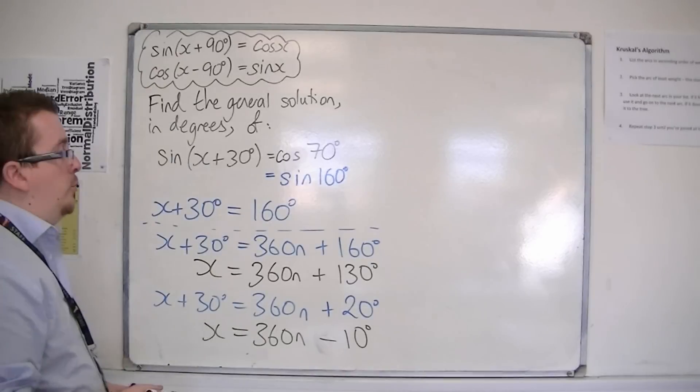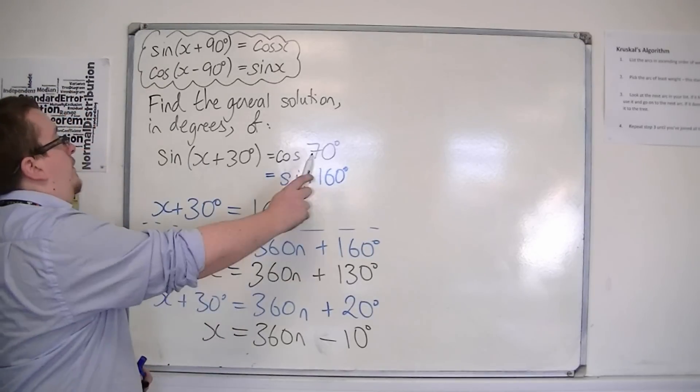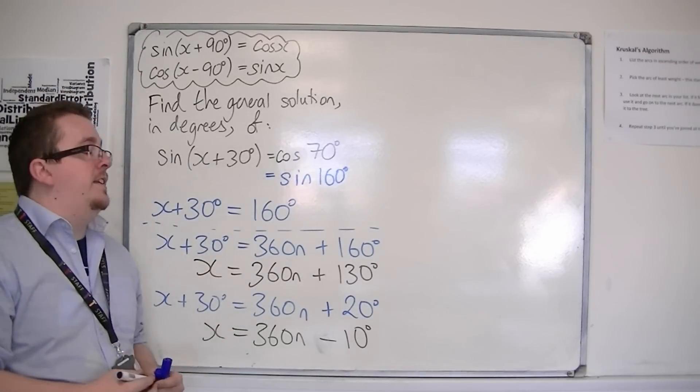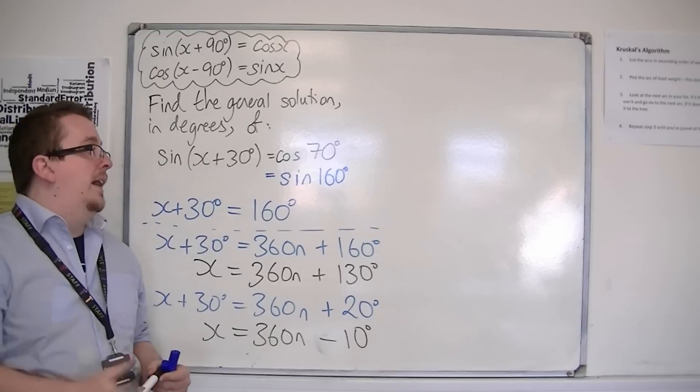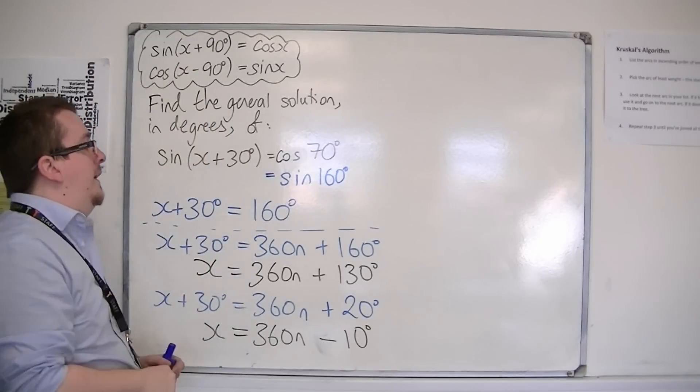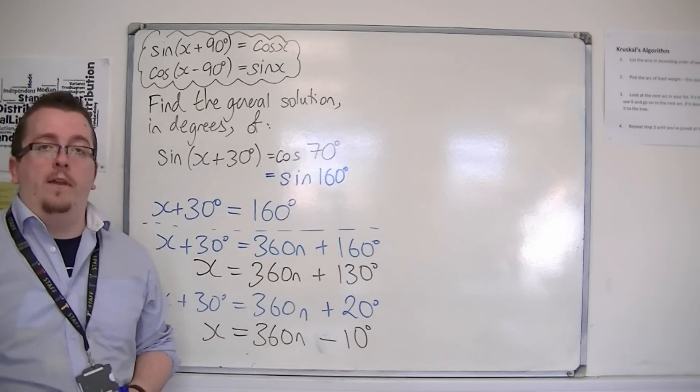And these two solutions will generate all of the solutions for sine of x plus 30 is equal to cos of 70. So that's how we can use these facts to help us solve a problem like that.